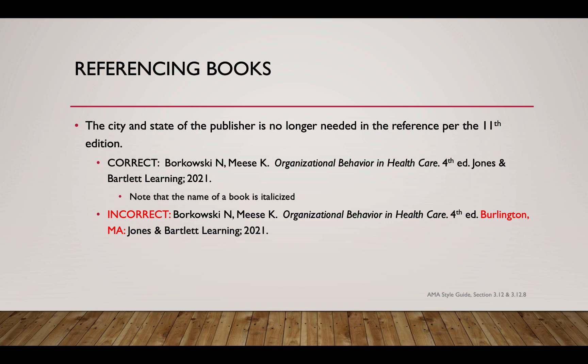One big change from the 10th edition to the 11th edition is that the city and state of the publisher no longer needs to be included in the reference. The proper citation for our course book — Organizational Behavior in Healthcare, fourth edition, by Nancy Borkowski and Kathleen Meese, published by Jones and Bartlett Learning in 2021 — shows that the book title is italicized. If you include Burlington, Massachusetts, you're using the 10th edition format, which is incorrect.